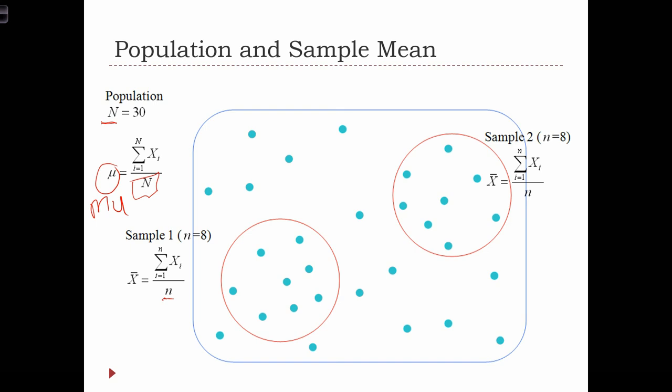Now from this population, we can take various samples. So here, I'm showing you two different samples. Each of those samples has a sample size n equals 8. And in order to calculate the sample means, x-bar,